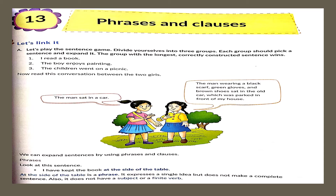The first exercise here is a game. Some sentences are given: I read a book, the boy enjoys painting, the children went on a picnic. We have to use certain groups of words to expand these sentences. Look at the example: the man sat in a car — expanded to: the man wearing a black scarf, green gloves and brown shoes sat in the old car which was parked in front of my house. We can similarly expand other sentences by using phrases and clauses.